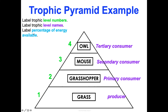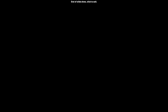Now let's label the percent of energy available. Grass is the producer getting energy from the sun — 100% of its energy is available to it. When the grasshopper eats that grass, remember the rule of 10 — it only has access to 10% of that energy. When the mouse eats the grasshopper, it's only getting 10% of 10%, which is 1% of the original energy available to the grass. The owl gets 10% of 1%, which is 0.1% — so it has to eat a lot to survive. That is an overview of the flow of energy on a big-picture scale.